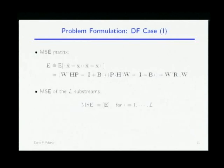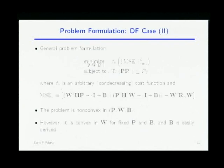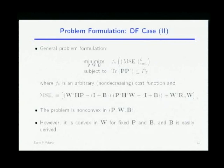For the decision feedback case, I do the same steps. The MSE matrix definition is the same, but for the decision feedback signal model there is an additional B matrix. Setting B to zero gives the linear case. The problem formulation is the same, but now I minimize with respect to P, W, and B. The problem is non-convex in all three variables.